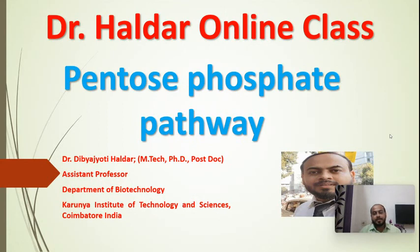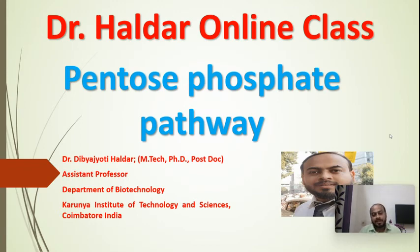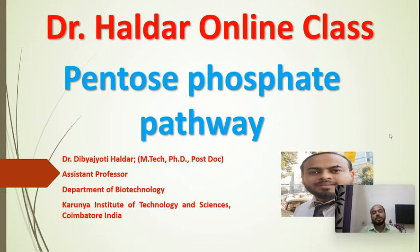Welcome to Dr. Hallar's online class. In the last class we discussed the pentose phosphate pathway, and today we will cover the rest of this pathway. Before starting, I want to rapidly recall the topics from last class. The pentose phosphate pathway is otherwise known as HMP shunt or hexose monophosphate pathway, and is an alternative pathway to glycolysis and the TCA cycle for oxidation of glucose. It occurs in two phases: oxidative and non-oxidative.